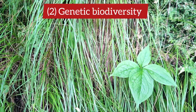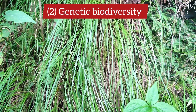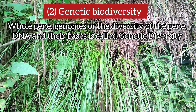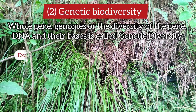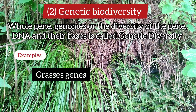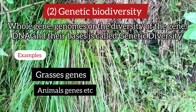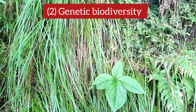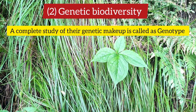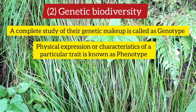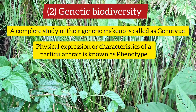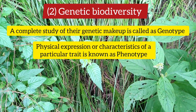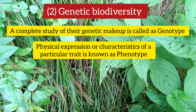The second level is genetic biodiversity, also called genetic diversity. This refers to the diversity of genes, genomes, DNA, and their bases. For example, what genes are in grasses, what genes belong to animals — the variation at the genetic and genomic level is called genetic diversity. The complete study of genetic makeup is called genotype, while the physical appearance is known as phenotype. Diversity of genes at the level of species, population, and community is called genetic diversity.